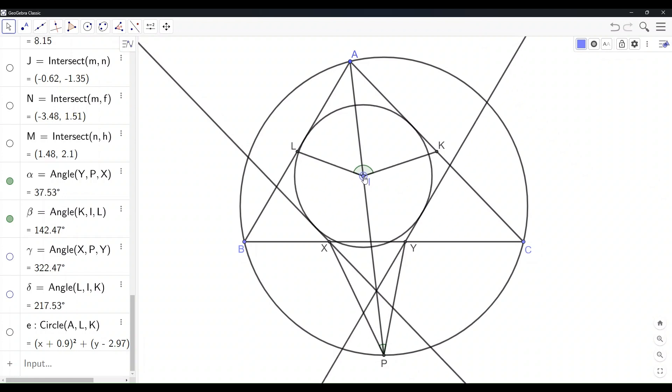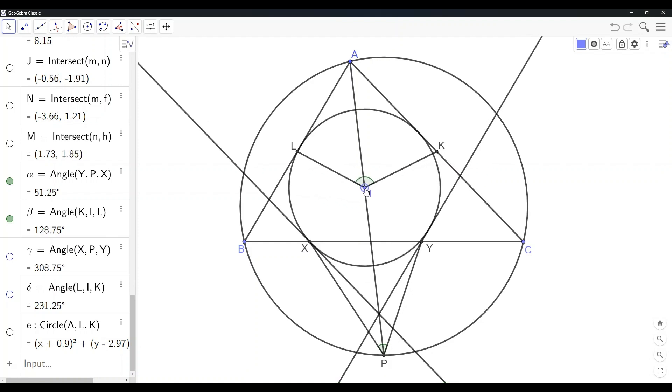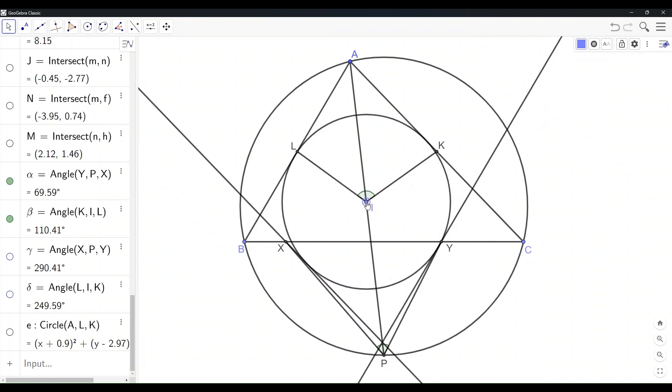The circle is not necessarily tangent to the side BC. As we can see, when we move I down, angle LIK is getting smaller, but angle XPY becomes larger. Their total sum is still 180 degrees. Keep moving the center I until the two parallel lines meet at point P down there.